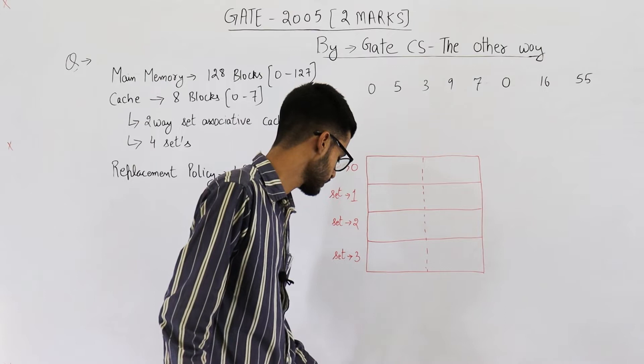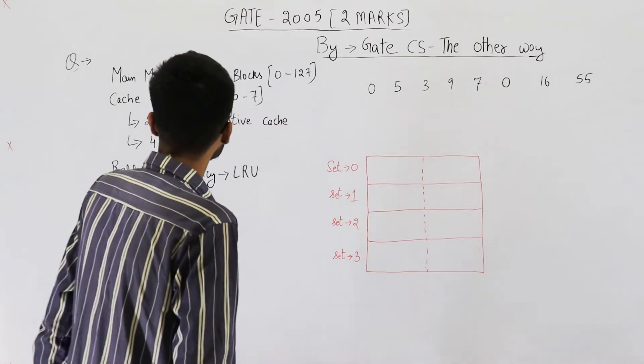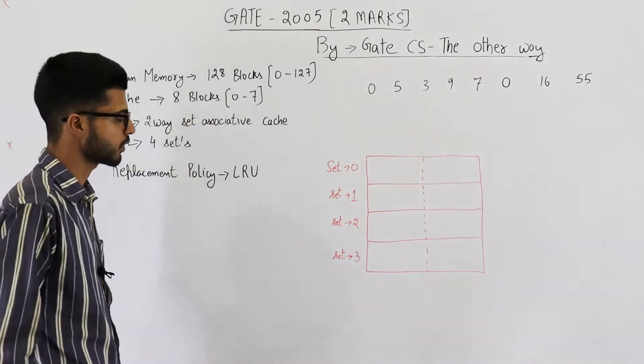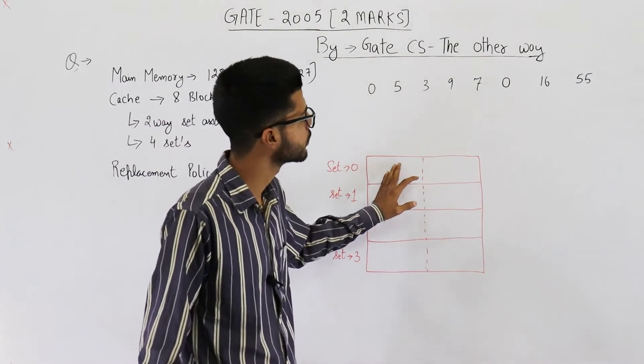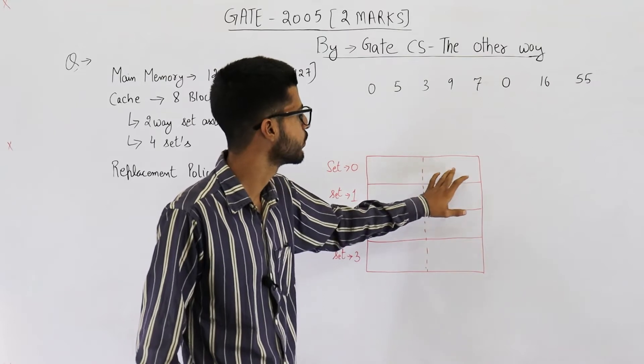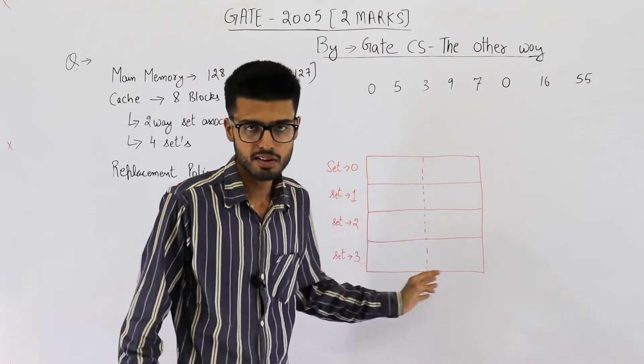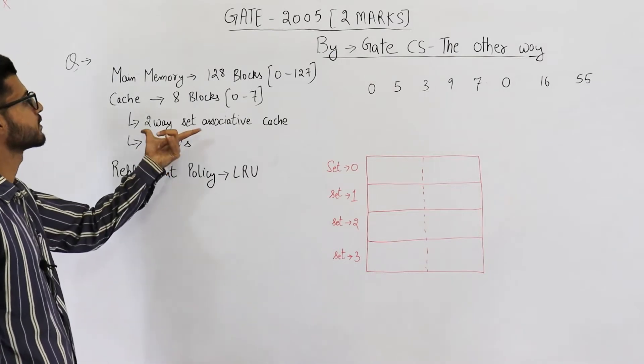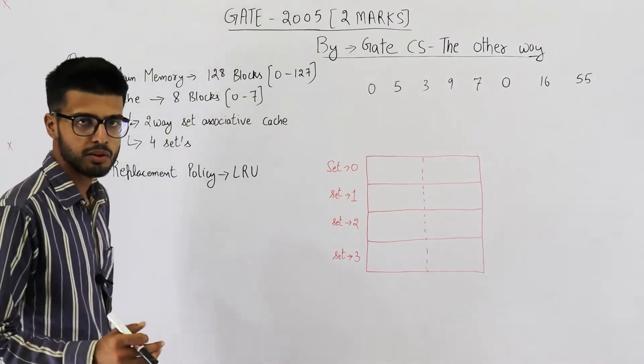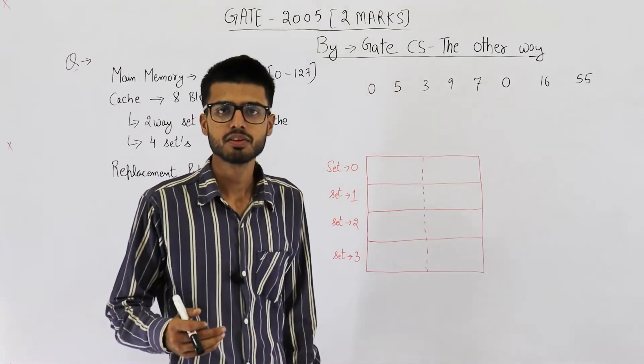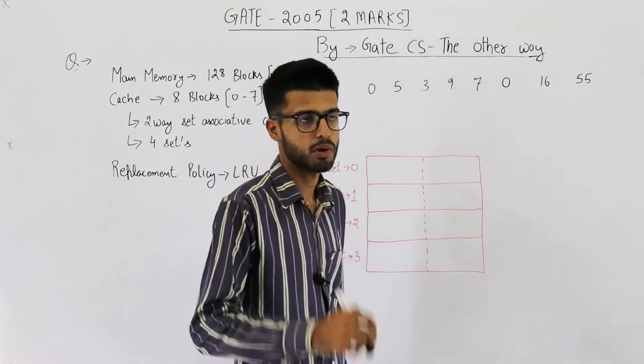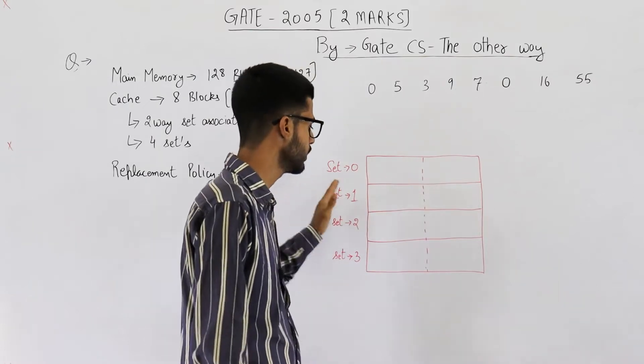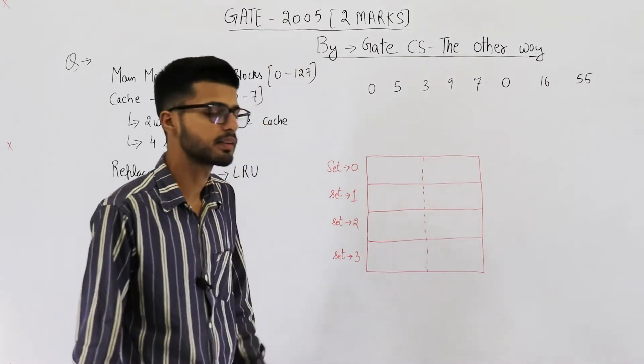So they're saying that cache has a total of 8 blocks, numbered from 0 to 7. I've represented those 8 blocks here: 0, 1, 2, 3, 4, 5, 6, 7. Also, this is a 2-way set associative cache. That means each set in cache will have 2 cache blocks. So 2 blocks in set 0, 2 blocks in set 1, so on 2 blocks in set 3.